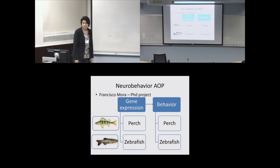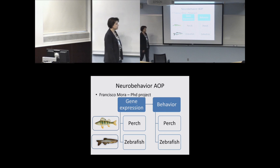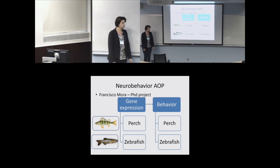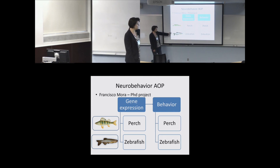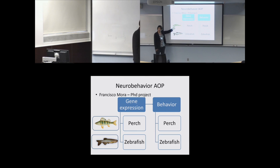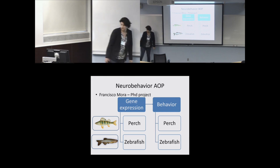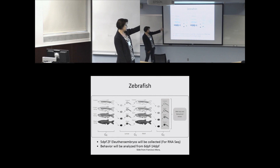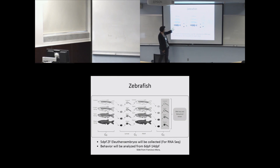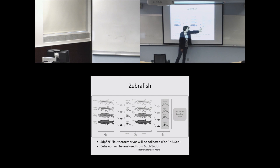This is part of Francisco Mora's PhD project, where he's taking gene expression data and linking it to behavior. We're looking at two different species: perch and zebrafish. We're using zebrafish mostly because more is known about them — it's a good model species — to try to inform some of the gene expression patterns we'd see in the perch. He took five-days-post-fertilized zebrafish embryos exposed to mercury over several generations, then collected deep sequencing and behavioral assays on the final generation.